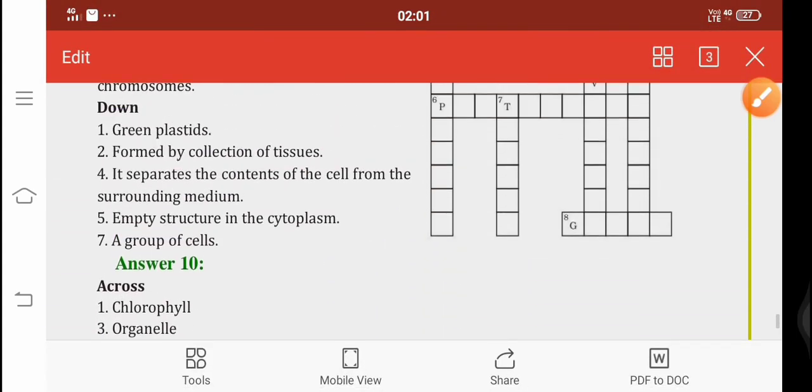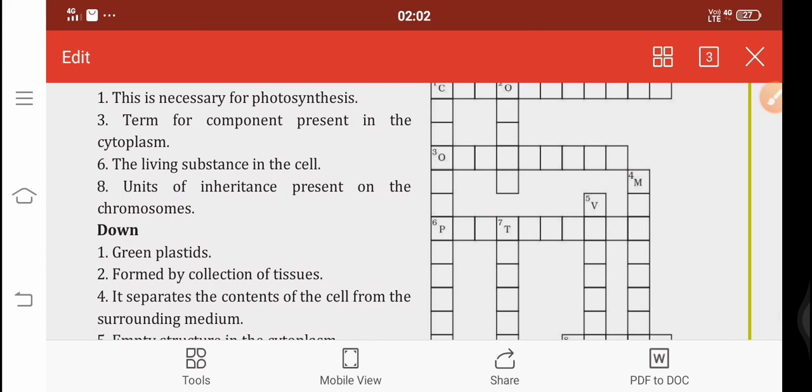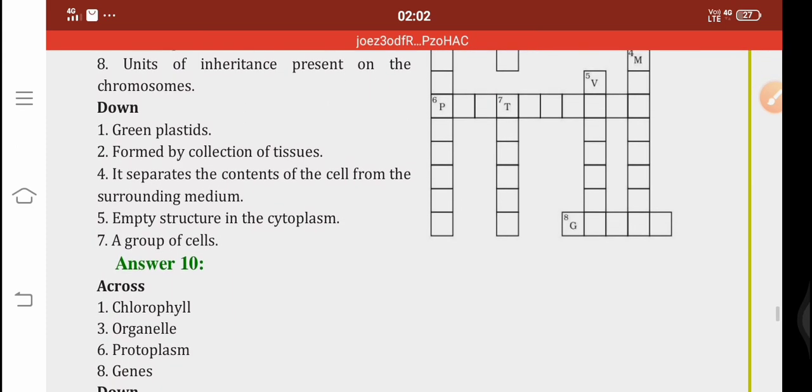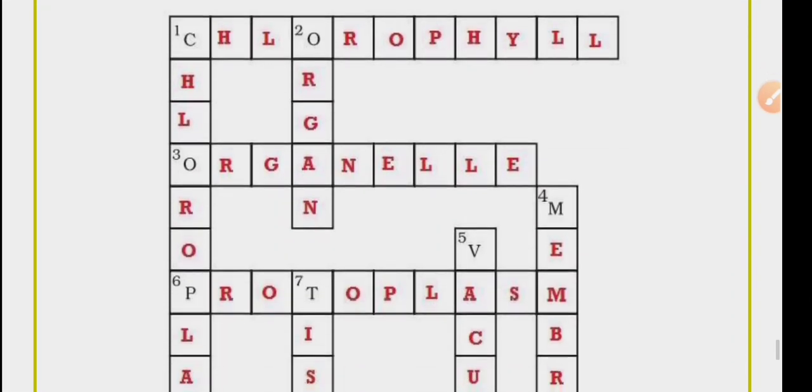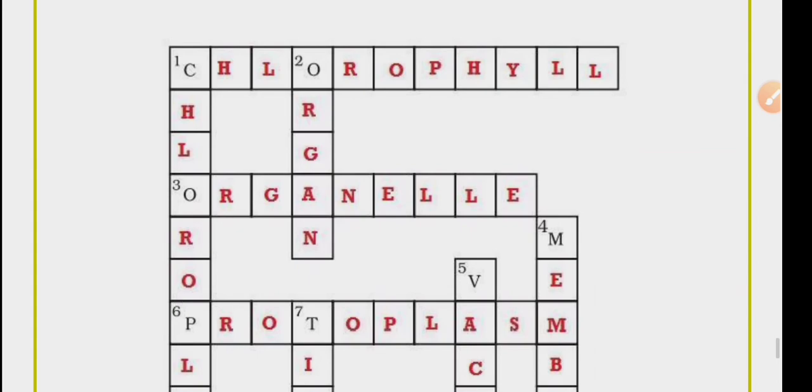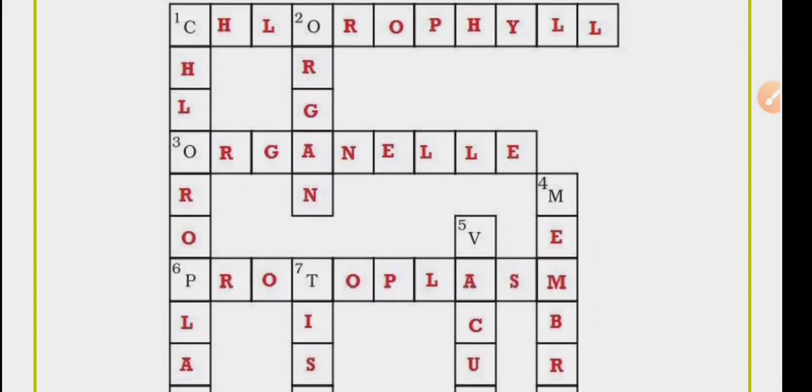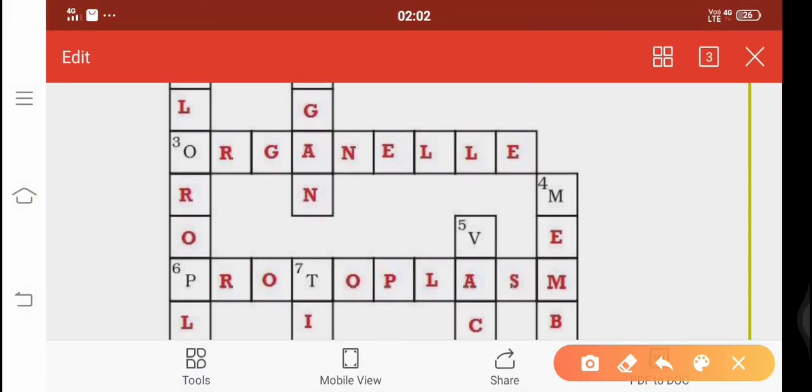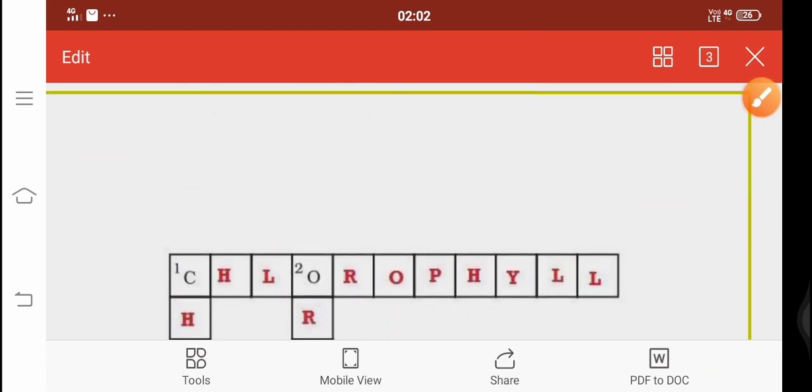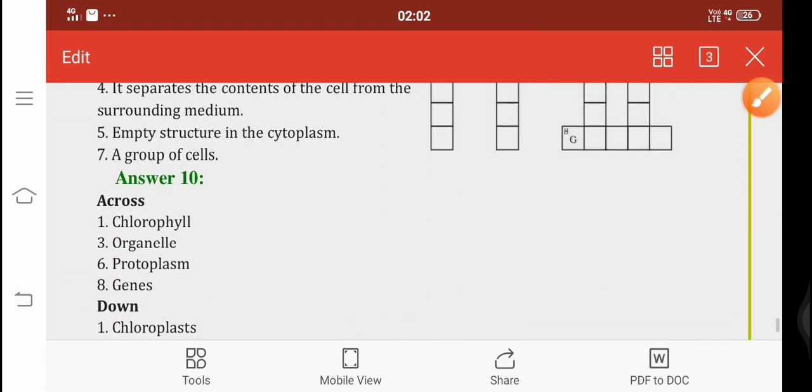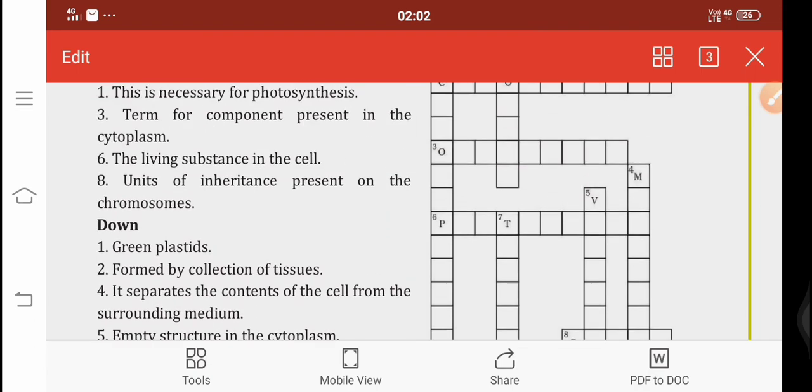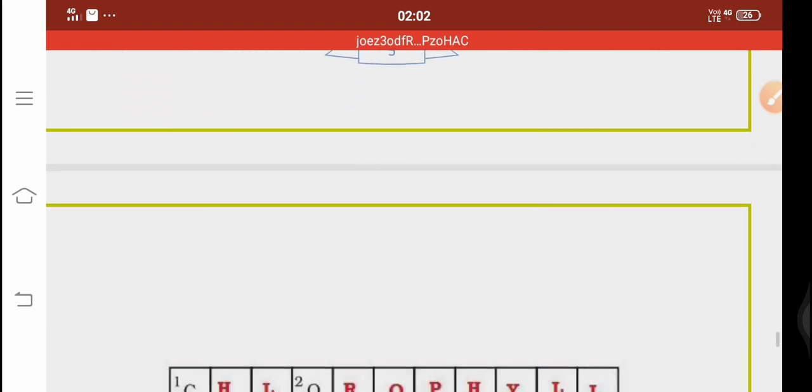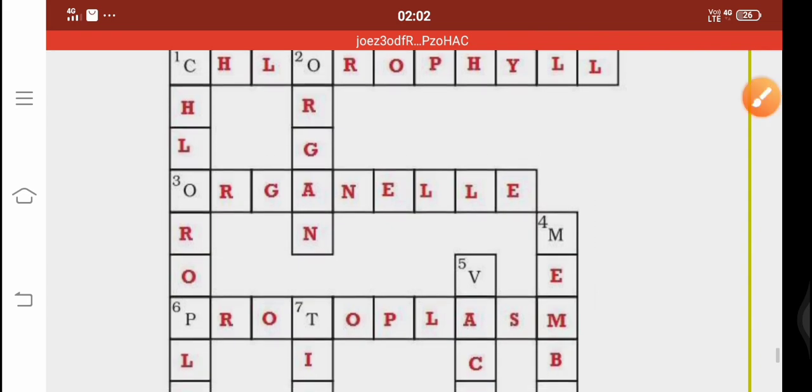The second clue is term for component present in the cytoplasm. The component present in the cytoplasm is known as organelles. The third clue is the living substance in the cytoplasm is known as protoplasm.